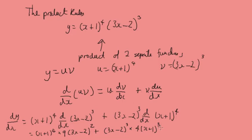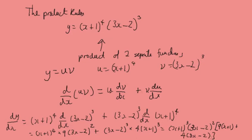We can tidy that up and get (x plus 1) to the power 3 times (3x minus 2) squared, then we take 9(x plus 1) plus 4(3x minus 2) — we're just rearranging and tidying it a bit more.